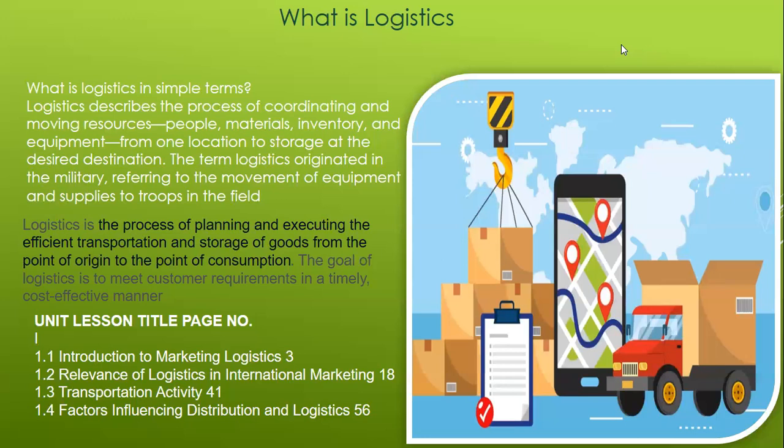If we talk about the book's knowledge, logistics describes the process of coordination and moving resources — the people, material, inventory, and equipment — from one location to storage at a desired destination. This includes from raw material supply to factory, and then from factory to the warehouse. Managing this activity is called logistics.